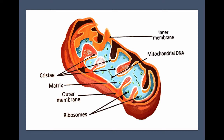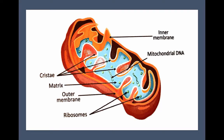The final stage, which makes more ATP, occurs at the folded inner membrane called the cristae, where a series of chemical reactions involving NADH, collectively called the electron transfer chain, occurs, resulting in 34 more ATP for a grand total of 36 ATP for each molecule of glucose consumed in the reaction.